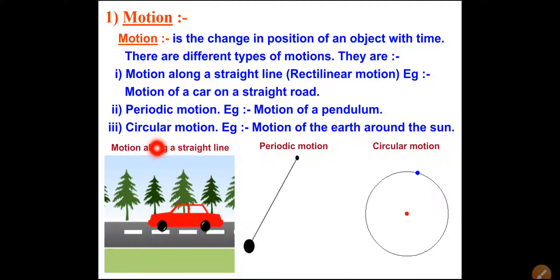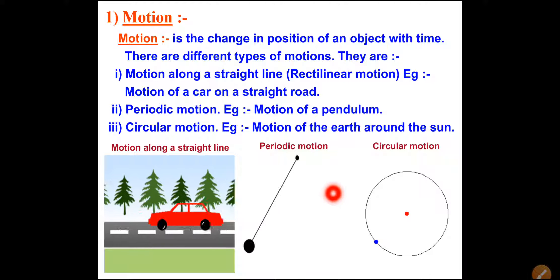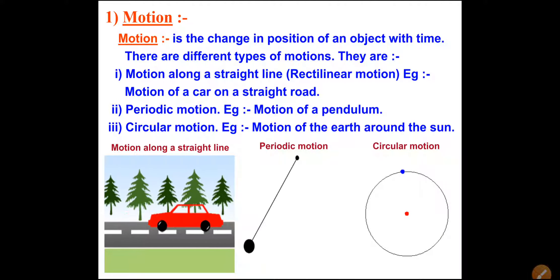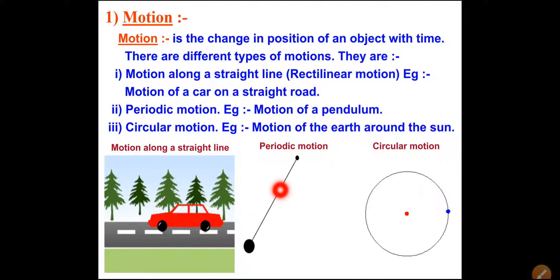Another type of motion is periodic motion, and the next type is circular motion. For periodic motion, take the simple pendulum as an example. The pendulum moves from one point to another continuously, and it comes back to its original position after some period - this is called periodic motion, also known as to-and-fro or back-and-forth motion. For circular motion, Earth revolving around the Sun in a circular path is an example of circular motion.